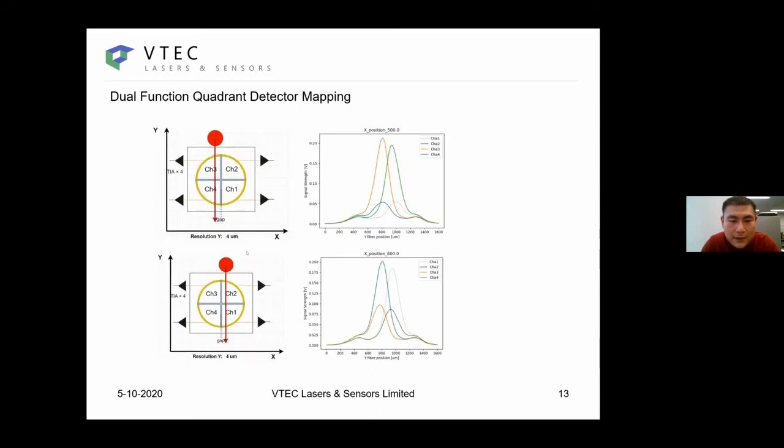In channel one and channel two, you observe the similar thing. When the fiber moved to the top of channel one and channel two, you see the other way around. The signal intensity in channel one and two is higher than channel three and four. The crossing point would be the middle position of the beam crossing from the upper part to the lower part of the core detector.